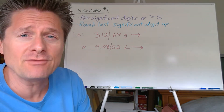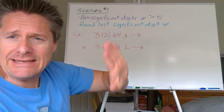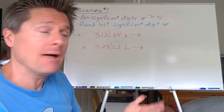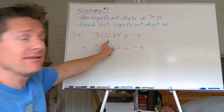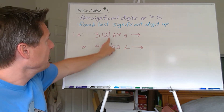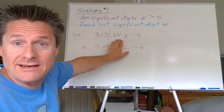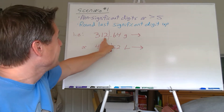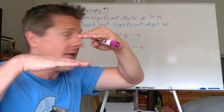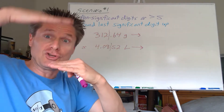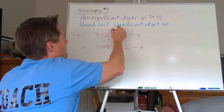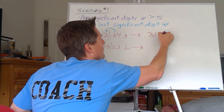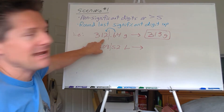Scenario number one — and this is true whether you're using two or three scenarios — if the non-significant digits to the right of the dash line are greater than five, you round the last significant digit up. For example: 312.64, good to three significant figures. The significant digits are 3, 1, and 2; the non-significant are 6 and 4. Since 0.64 is greater than five, it's closer to 313 than to 312 — so that two rounds up to a three: 313 grams.